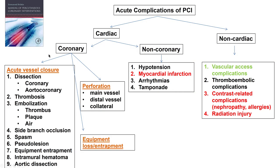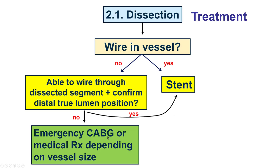We have a situation of acute vessel closure, one of the three major complications of percutaneous coronary interventions — the other two being perforation and equipment loss or entrapment. This was most likely caused by dissection given the pre-existing very severe lesion in the circumflex.